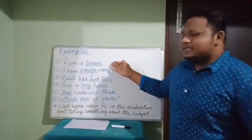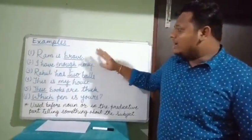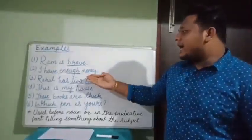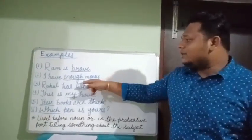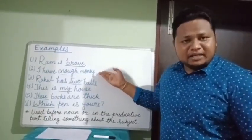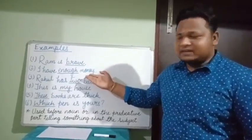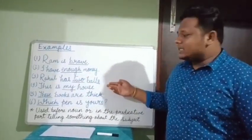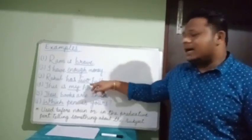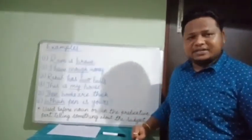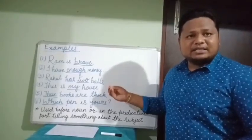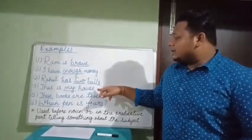Let us clear this definition with the help of some examples. Example one: Ram is brave. Here the word 'brave' shows the quality of Ram. I have enough money — the word 'enough' tells about how much money you have, so 'enough' is an adjective here. Rahul has two balls — the word 'two' tells about how many balls Rahul has, so it is an adjective. This is my house — if you ask 'whose house is this?' the answer is 'my', so 'my' is an adjective here.